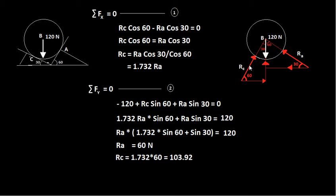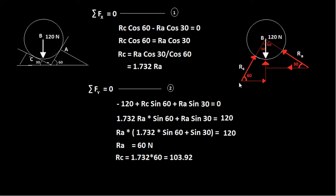Applying the summation of forces in the x-direction equal to 0, there are two horizontal forces whose sum must equal zero. One acts in the positive x-direction and the other in the negative x-direction. The equilibrium equation gives: RC cos60 − RA cos30 = 0, where RC cos60 is the horizontal component of RC and RA cos30 is the horizontal component of RA.